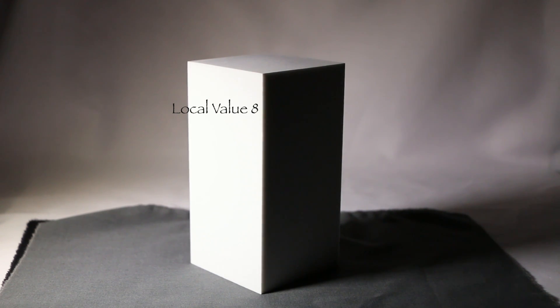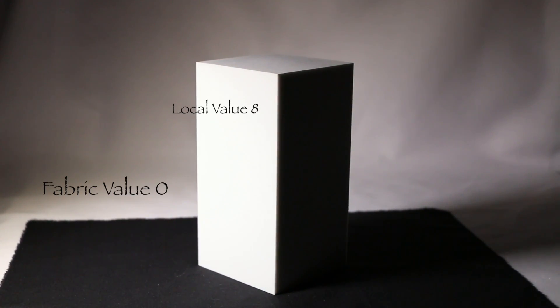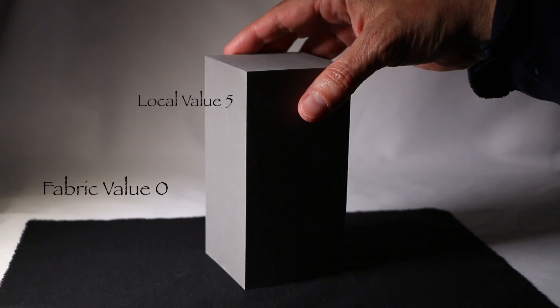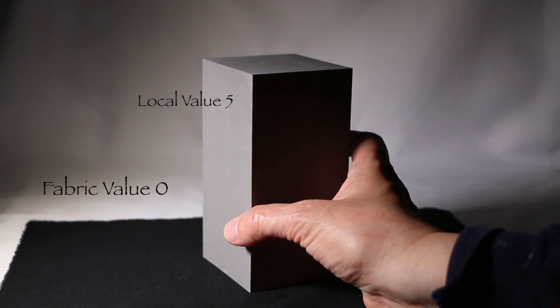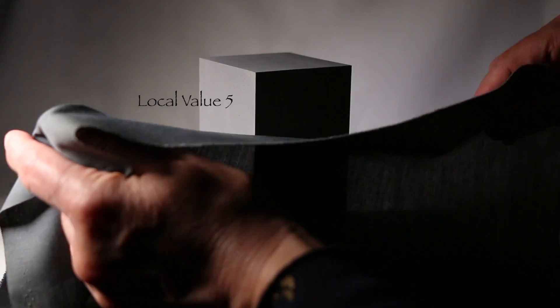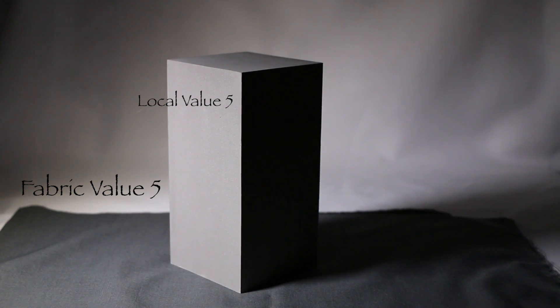And when we get to fabric value 0 which is black it absorbs all the light. And notice how dark the right side plane is now. And you even have a completely lost edge at the bottom. Now what we're going to do is change the rectangle to a local value 5, a middle gray. And we're going to go through the same process but backwards. Our fabric value 0, completely no reflected light at all. Now when you get to fabric value 5 there is some reflected light if you're there in person but the camera did not pick it up.